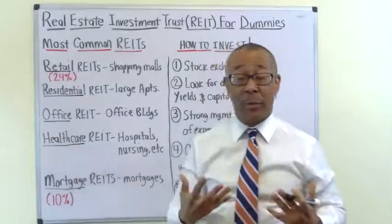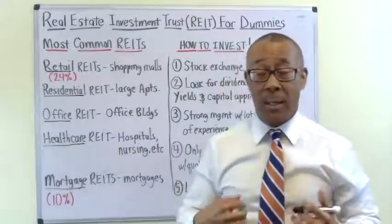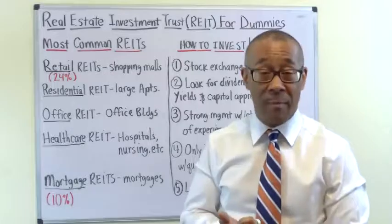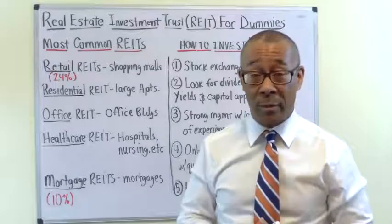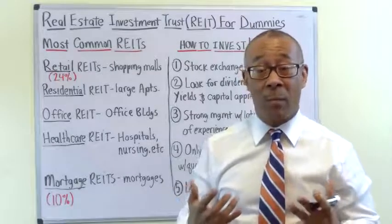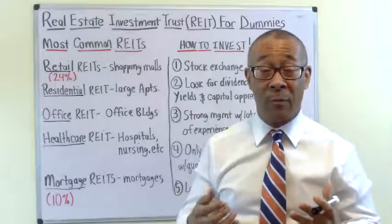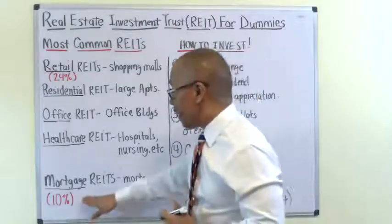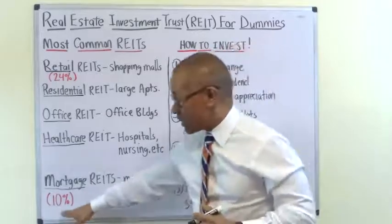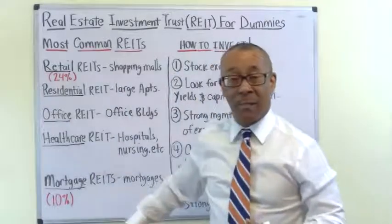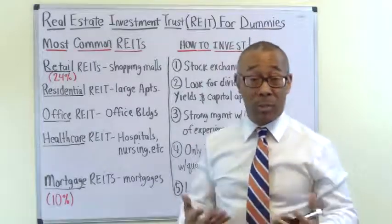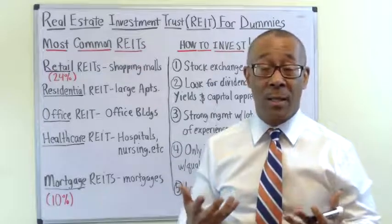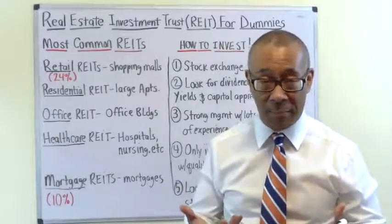Next is the office REIT, where they invest in office buildings. Office building investments tend to go with the economy, so pay attention to where we are in the economic cycle when investing in office REITs. Next is the healthcare REIT, where they invest in hospitals, nursing facilities, medical office centers, and retirement facilities — a very healthy sector that will likely maintain its vibrancy for years to come, considering the baby boomer demographics. And number five, we have the mortgage REITs, which comprise 10% of overall REIT investment in the U.S. Mortgage REITs invest in mortgages and make money off the interest on the money they lend out.